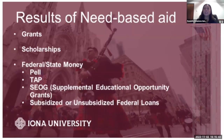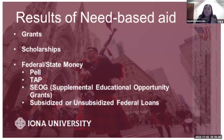The results of need-based aid include grants, scholarships, and federal and state money. You'll notice the federal Pell Grant and New York State TAP — these are grants given based on FAFSA information. If students meet requirements, they receive these awards and do not need to repay them. The SEOG — Supplemental Educational Opportunity Grant — also does not need to be repaid and can be used throughout the student's college career.